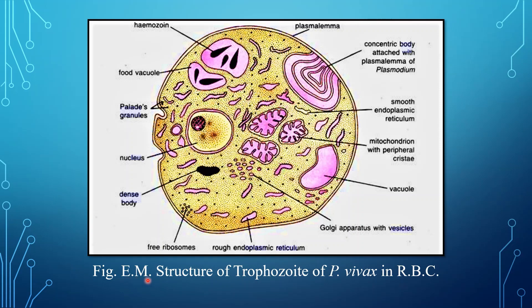The electron microscopic study of the trophozoite reveals its detailed structure. The shape of the trophozoite is amoeboid, and it is bounded by a double membrane called the plasmalemma. The cytoplasm contains small dense particles, probably containing ribonucleoprotein.